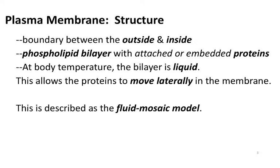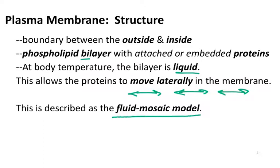The cell membrane is the boundary between the outside world — the chemistry outside — and the chemistry inside. It's described as a phospholipid bilayer. 'Bi' is two, so you have two layers of phospholipids with attached or embedded proteins. At body temperature it's liquid, which means that the proteins can move side to side through the phospholipids — part of how the cell interacts with and adapts to its environment. Our model for the cell membrane is referred to as the fluid mosaic model.